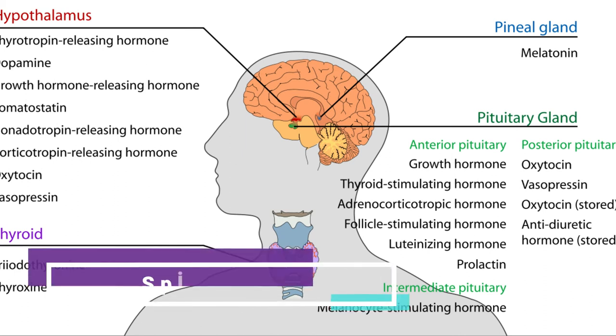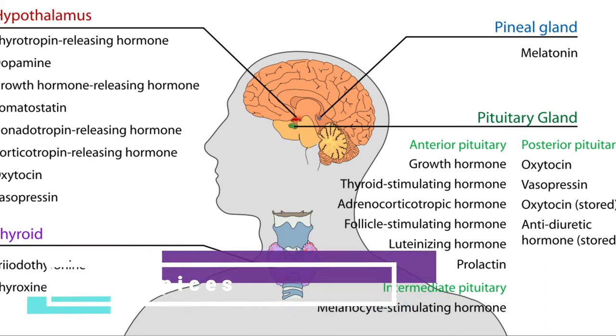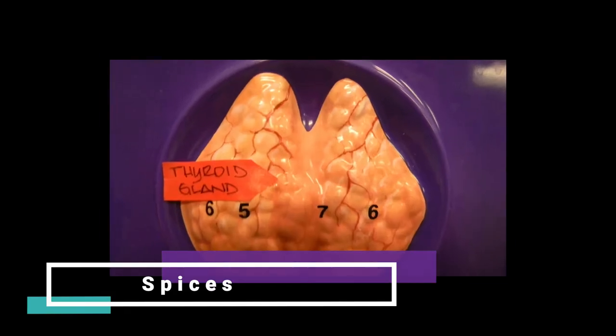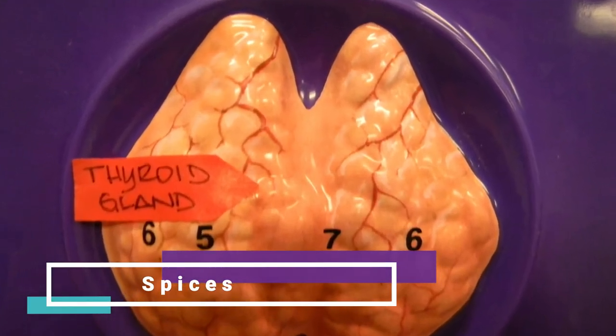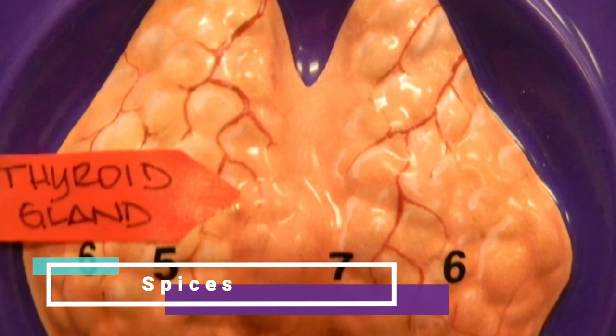Spices. Some spices and herbs have anti-inflammatory properties to help protect and balance thyroid function. Add flavor and a dose of antioxidants to your daily meals with turmeric, green chilies, and black pepper.